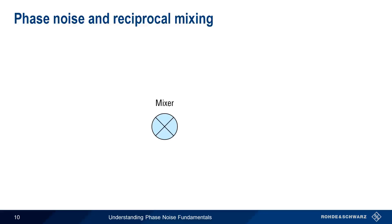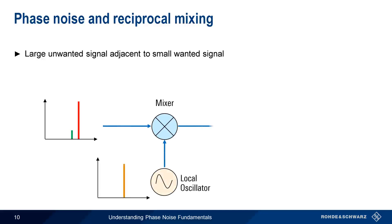Phase noise can also cause problems due to something called reciprocal mixing, which arises in situations where we have a small wanted signal, here the signal in green, and a large adjacent unwanted signal, here the signal in red. Mixing these signals with a relatively pure local oscillator, we can move the signals down to an IF, or intermediate frequency, for processing. The IF filter only selects the desired signal and rejects the larger unwanted signal.